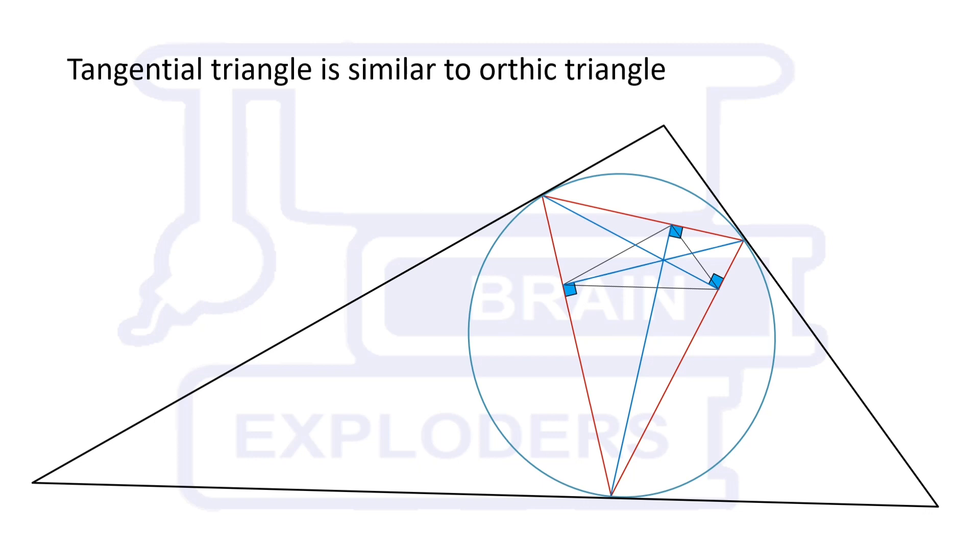Now we need to calculate the angles of this tangential triangle. The side opposite to angle A forms the same angle with both the sides of the tangential triangle which do not contain point A on it.